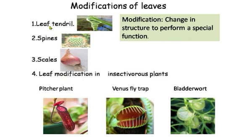First are leaf tendrils. When the leaf changes its structure like a spring so that it can wrap around a nearby hard object, it helps the plant to climb up. Leaf tendrils are present in plants that have very weak stems, such as climbers like pea and grapes. In these plants, the leaf changes its structure like a spring.